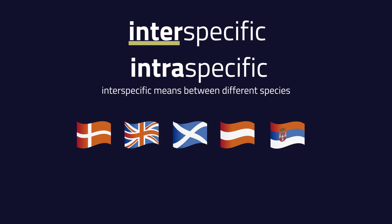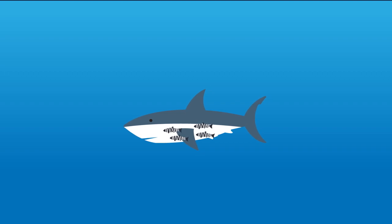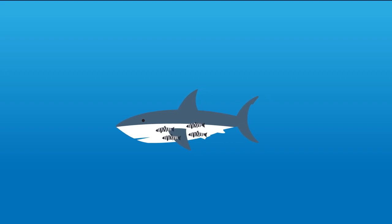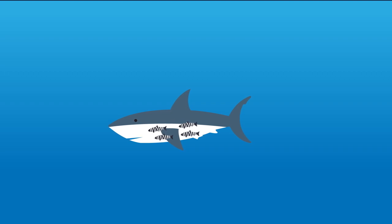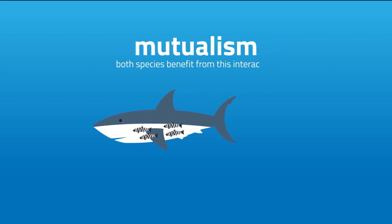Intraspecific and intraspecific interactions can be positive, negative, or neutral. An example of a positive interaction is how little pilot fish gather around sharks and rays, eating the parasites on their hosts. This is known as mutualism because both species benefit from this interaction.